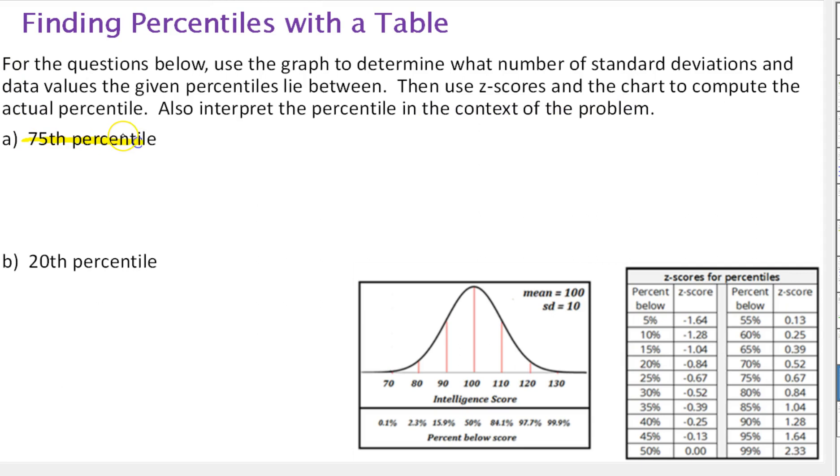So we have the 75th percentile. Looking at this just to get a feel for it, the 75th percentile is between 50 and I think that says 84.1. So it lives in here somewhere. So that's zero to one standard deviation or somewhere between a score of 100 and 110. Now to find it exactly, the 75th percentile has a z-score of approximately 0.67.